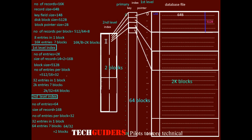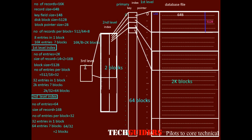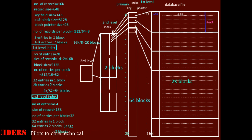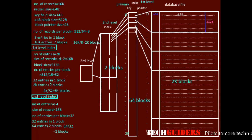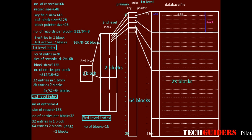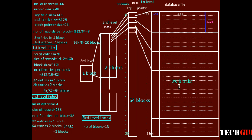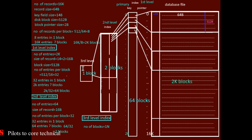The second level index cannot fit into a single block, so we go for one more level of indexing. The third level index is also a primary index with one entry per each block from the second level index. Since there are 2 blocks in the second level, the number of entries in the third level index is 2. Those two entries can fit in a single block which has capacity for 32 index entries, so the third level index fits into one block and we stop here.